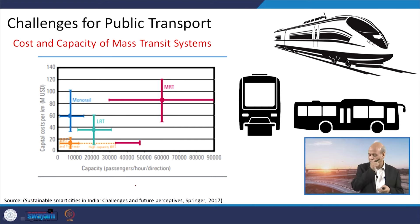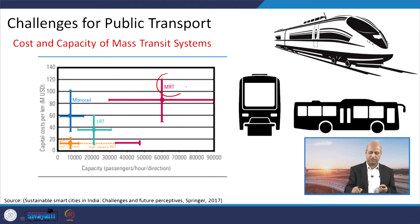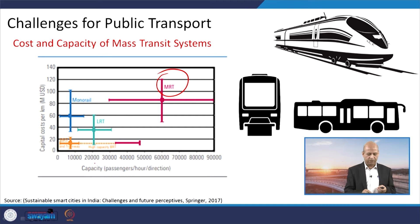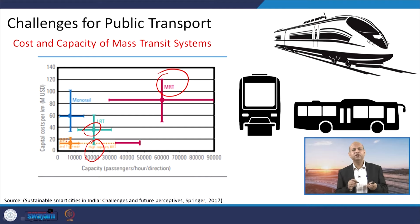In terms of cost and capacity of different transportation systems, Mass Rapid Transit has large capacity but considerable cost. In the case of Light Rapid Transportation, capacity is lower but so is cost. Depending on the population density of different parts of a city, we can have MRT or LRT. We need to analyze the situation and implement the system most appropriate for each location.